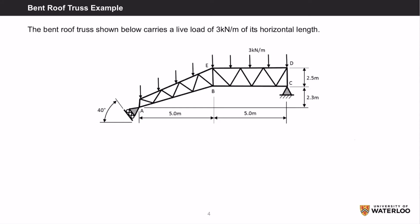Let's start with the bent roof truss example. The bent roof truss shown below carries a live load of 3 kN per meter along its horizontal length. Just to clarify, the horizontal length is the 10 meters which is the full horizontal length of this truss.